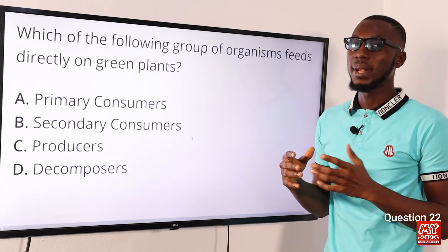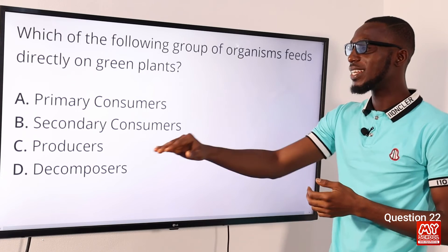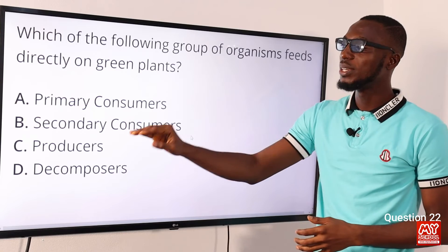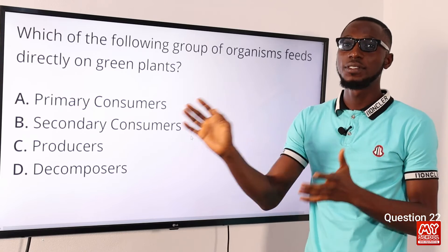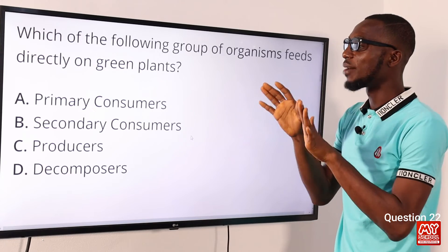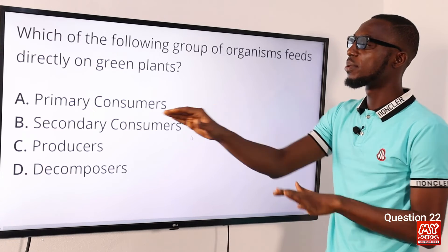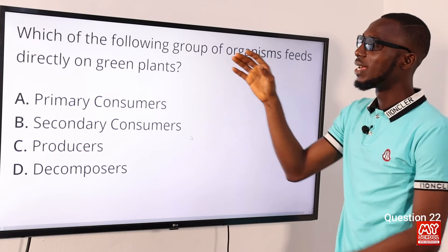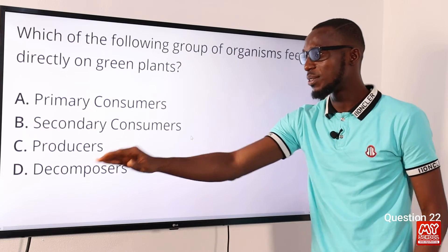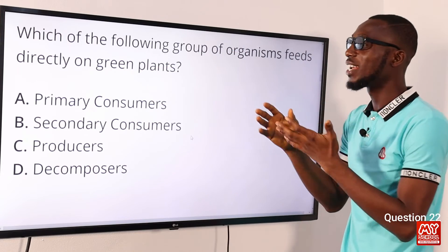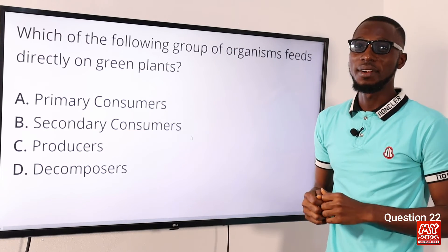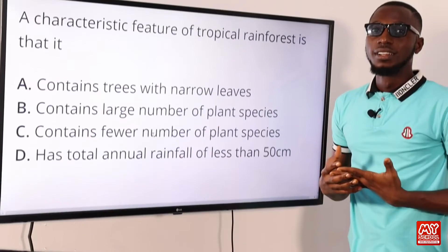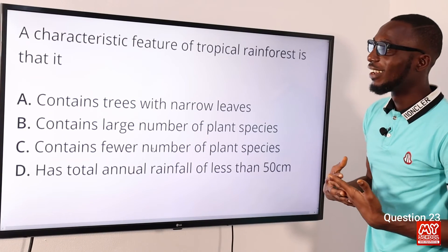Question twenty-two: which group of organisms feeds directly on green plants? Green plants are the producers. Herbivores feed on producers and are referred to as primary consumers. So the correct option is option A for primary consumers.